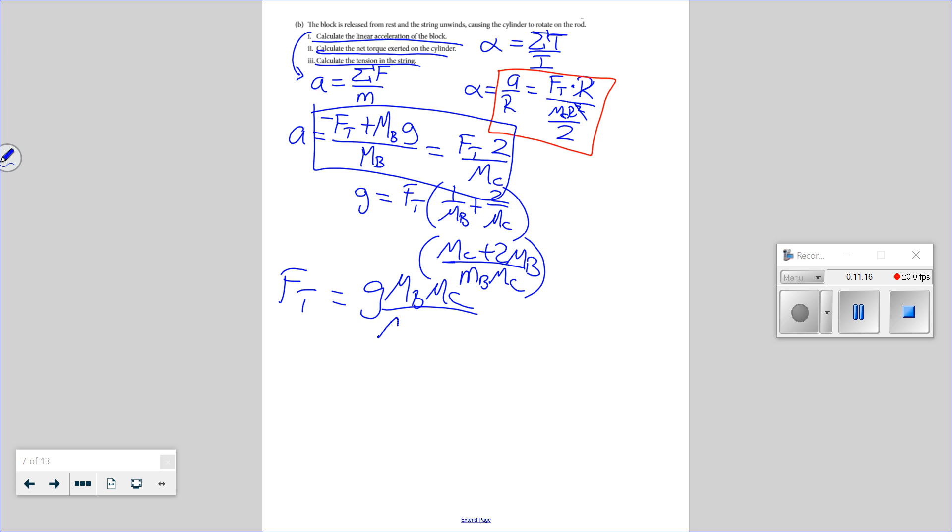And if I know the force of tension, I just multiply by 2 over MC. So A equals 2 times the force of tension over MC. That means 2 times this cancel on MC. A equals 2 MB G over MC plus 2 MB. I promise I can write better in person. That's number one.